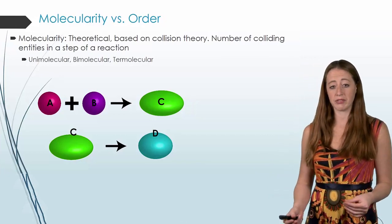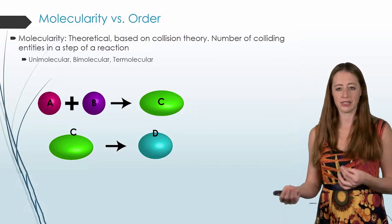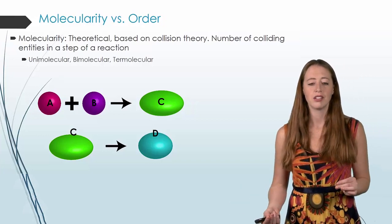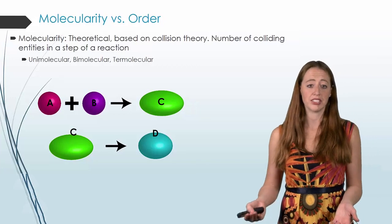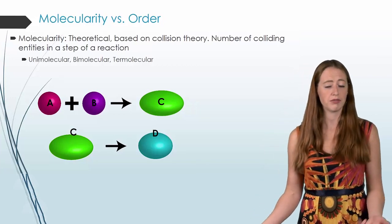So unimolecular is if you have just one colliding entity. Or in other words, it just reacts on its own. Bimolecular is two colliding entities. Termolecular is three colliding entities. It's far less common.